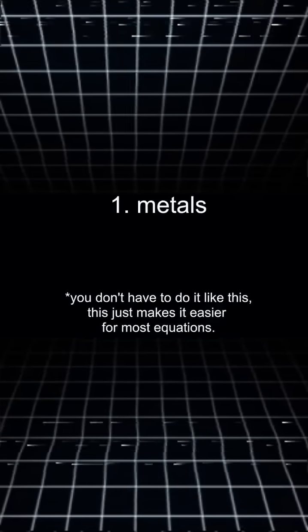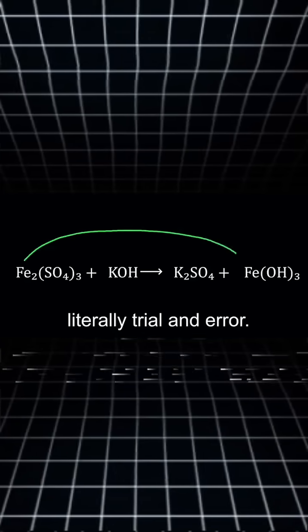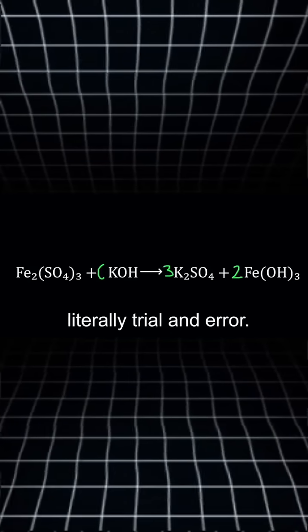As a rule of thumb, you should balance out the metals first, then the non-metals, and then hydrogen and oxygen at the end. But it's really just trial and error until everything is balanced.